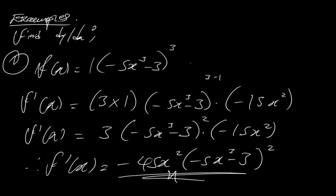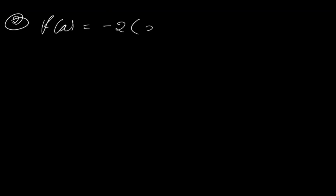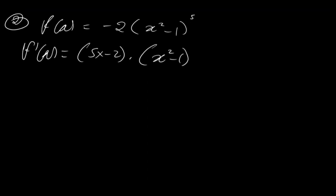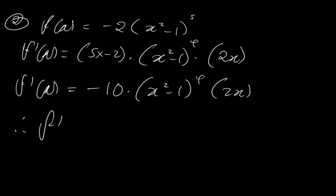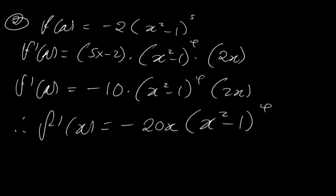Let's look at another example. Say f of x is equal to minus 2 times (x squared minus 1) to the power of 5. When we apply the chain rule, we'll have f prime of x being equal to n times c, which will be 5 times minus 2, times the something (x squared minus 1) to the power reduced by 1, which will be 4, times the derivative of the something, which is 2x. So f prime of x is equal to minus 10 times (x squared minus 1) to the power of 4, times 2x. Simplifying further, f prime of x is equal to minus 20x times (x squared minus 1) to the power of 4.